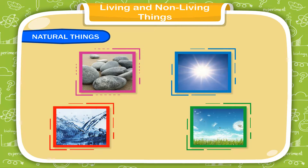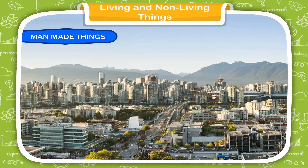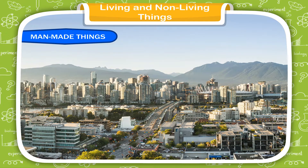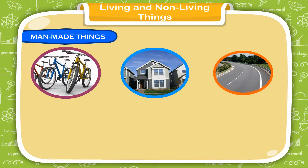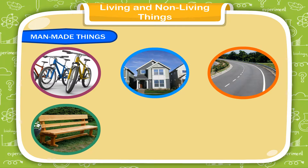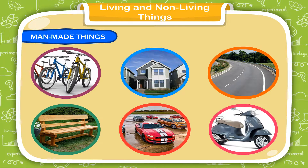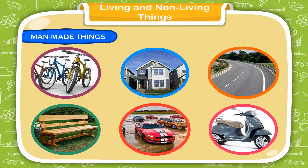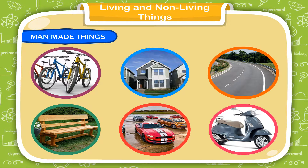Remember, we cannot make these things ourselves. Things which are made by humans are called man-made things. Bicycles, houses, roads, benches, cars, scooters, etc. are the examples of man-made things.